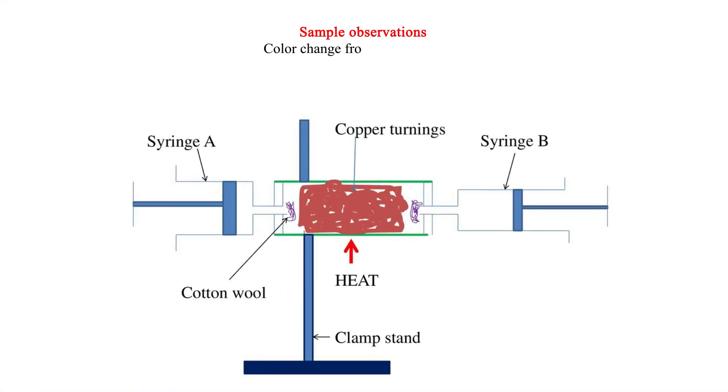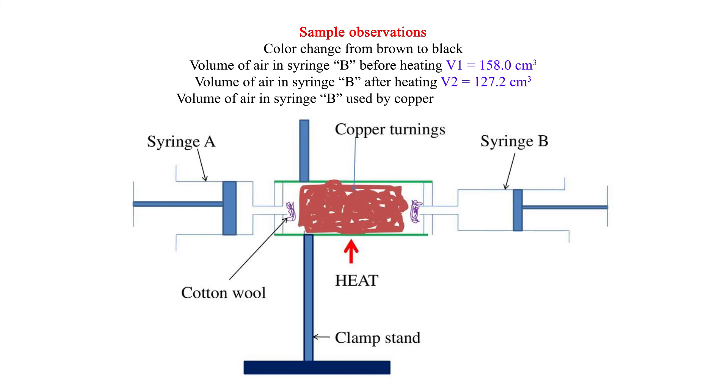Sample observations: Color change from brown to black. Volume of air in syringe B before heating V1 equals 158.0 cm³. Volume of air in syringe B after heating V2 equals 127.2 cm³. Volume of air used by copper: V1 minus V2 equals 30.8 cm³.